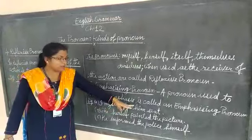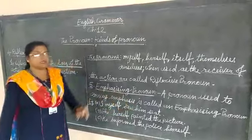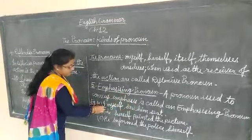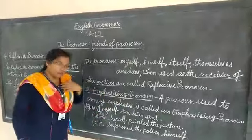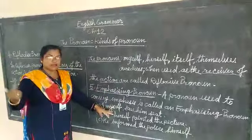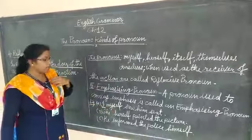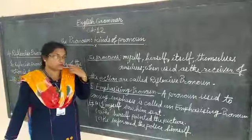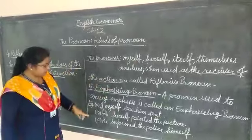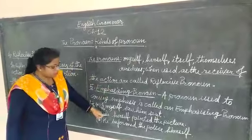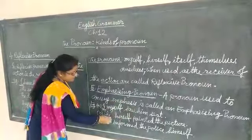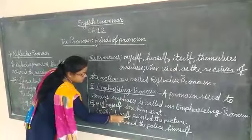For example: I, myself, show him the seat. The person showing the seat is myself — the person himself is telling this. She, herself, painted the picture — conveying the message that she herself did it.